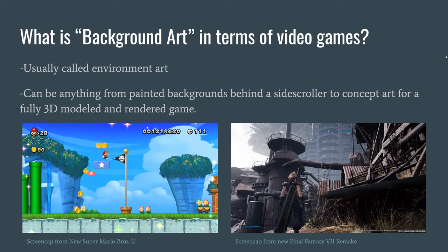In video games, background art is usually called environment art. It can range from painted backgrounds behind a side scroller — similar to what you see in a Super Mario screenshot — all the way to concept art for a fully rendered 3D modeled game like this Final Fantasy Remake screenshot.